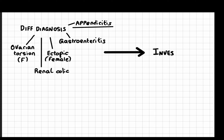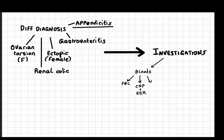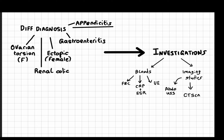Moving on to the diagnostic workup, initial tests would include blood tests — specifically a full blood count, urea and electrolytes, CRP, and ESR, which are inflammatory markers. It is very common to find raised white cell counts, and sometimes raised inflammatory markers. In this case, imaging studies are crucial for confirmation. This could be an abdominal ultrasound, which is very useful; however, the gold standard would be a CT scan of the abdomen and pelvis, which gives detailed visualisation of the appendix and any associated complications.